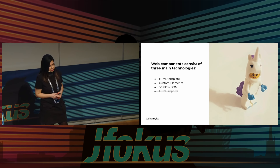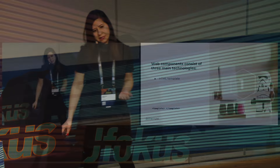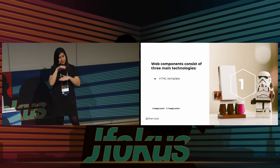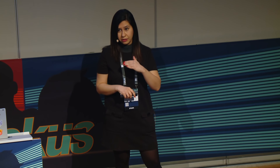So let's find out what web components actually are. They consist of three technologies: the HTML template, custom elements, and Shadow DOM. There used to be an HTML import part, but with ES6 modules we don't use that anymore — if you see articles referencing HTML imports, that's a sign the article is outdated. The HTML template tag is pretty simple — it has a start and an end. Anything you put in the middle is your template, and the browser won't load it unless you explicitly ask for it. It's going to be parsed, but not rendered until you manually ask the browser to do so.